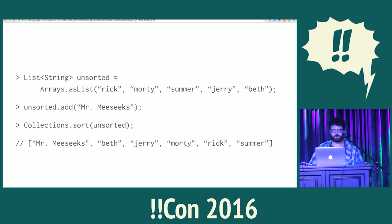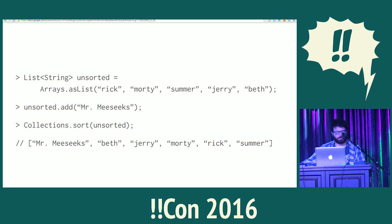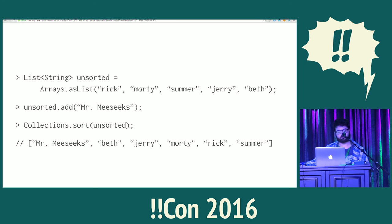Let's break this. We're going to take the same list of strings and add a string starting with a capital letter. When we call sort on this new list, the capital letter string ends up in the wrong place — or at least wrong for English speakers. It should be in the middle of this list, next to Morty and not before Beth. Without going too deep into it, this is because uppercase characters have a different representative value than lowercase characters, and the natural sort does not sort the string starting with a capital letter the way that English speakers would expect.